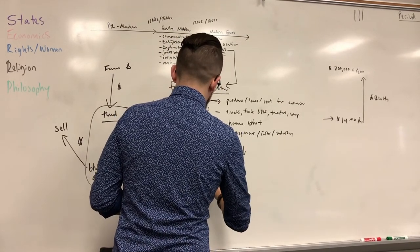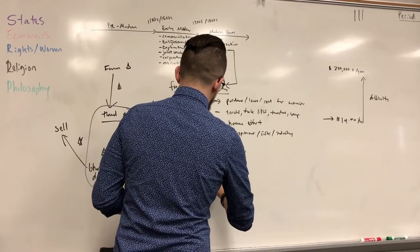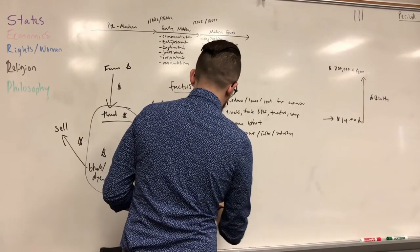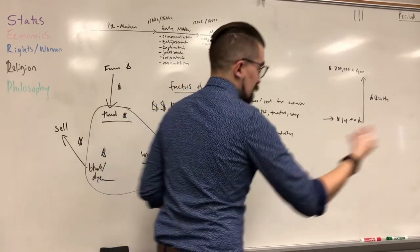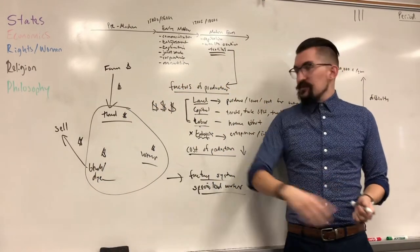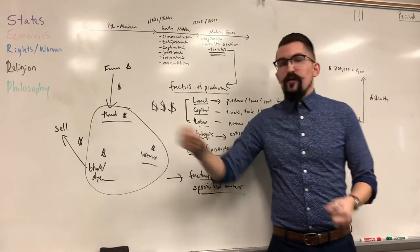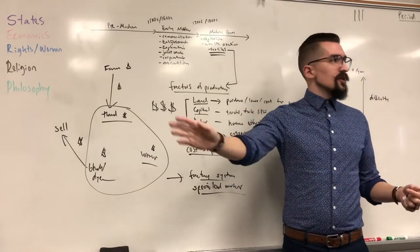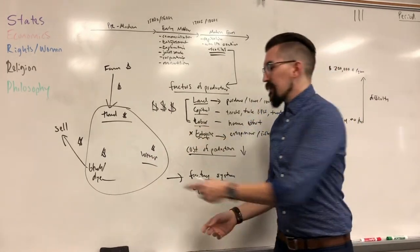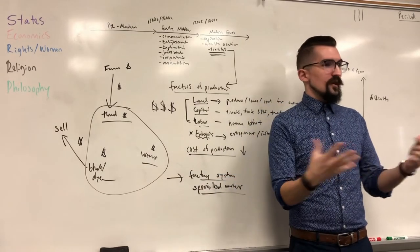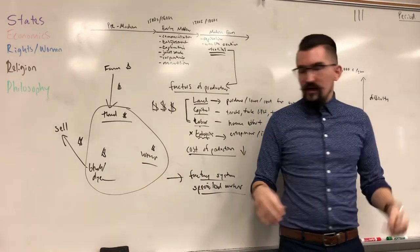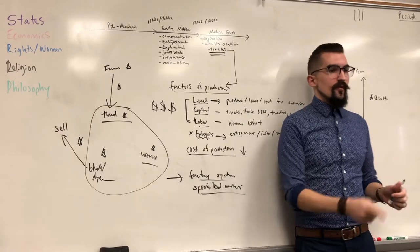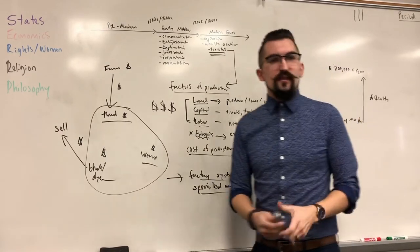Now that everything is in the same spot, you can also have people specialize. Instead of one person doing everything, you have people specialize in one task — someone who just threads all day gets really good and really fast at threading. It's called specialized labor. People are paid a wage to do one specific task really well, then pass it on to the next specialized worker.